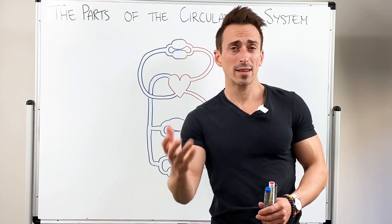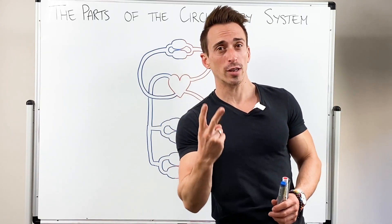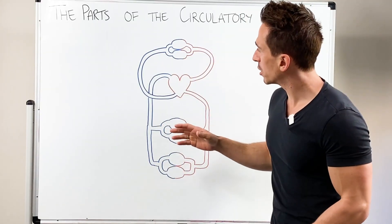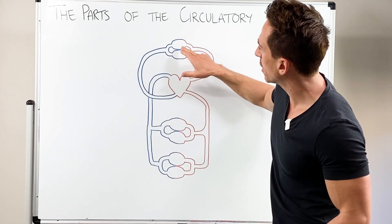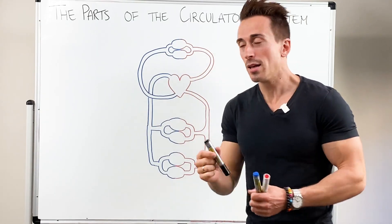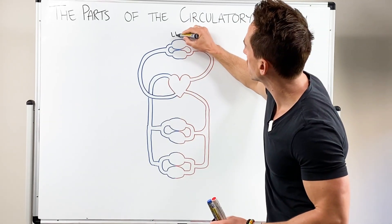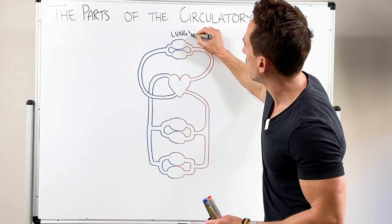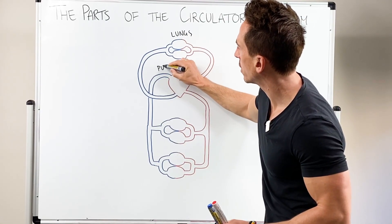The first thing we need to talk about is the fact that there's actually two different types of circulation. There's the circulation that goes from the heart to the lungs and back to the heart. So let's just write lungs here. And this is called the pulmonary circulation.